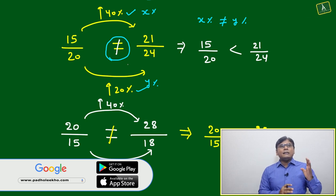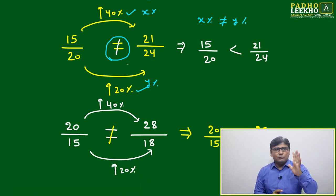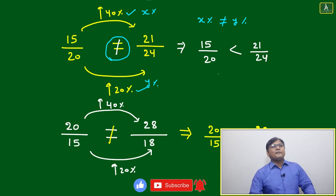Now the only question is next level: if it is not equal, then will left side ratio be more or right side ratio be more? How to decide 15 by 20 will be less than 21 by 24?